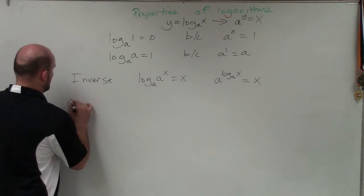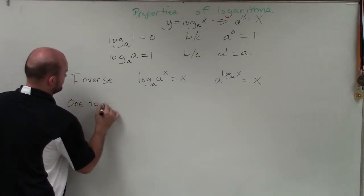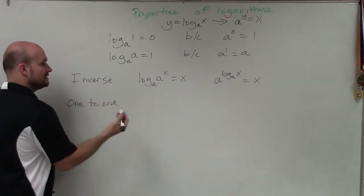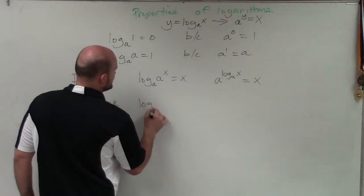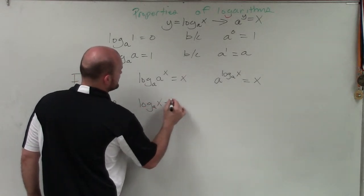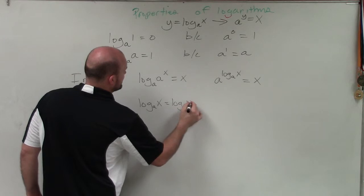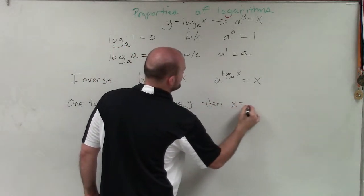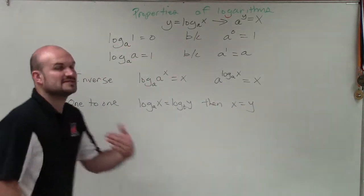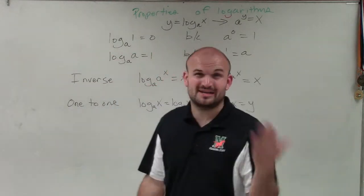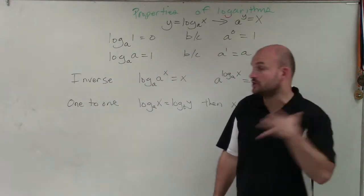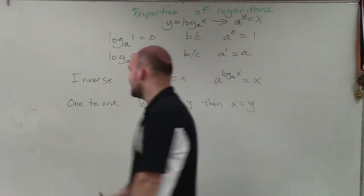The next one is going to be what we call our one-to-one property. When dealing with the one-to-one property, what that pretty much states is log base a of x is equal to log base b of y, then x is equal to y. And that's very similar to our one-to-one property in exponents, which I'll go ahead and explain again as we go through it.